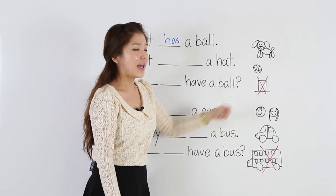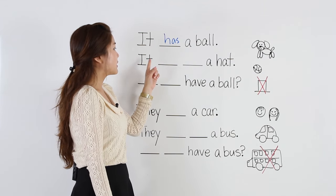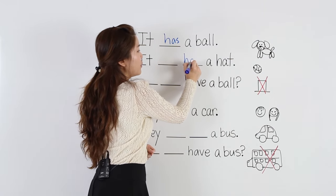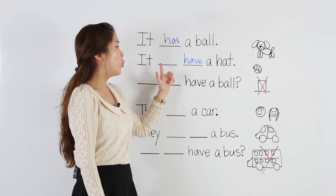Now, there's a hat, but it says no. It's negative. So it... remember, for negatives we always use have. But what goes in the front?